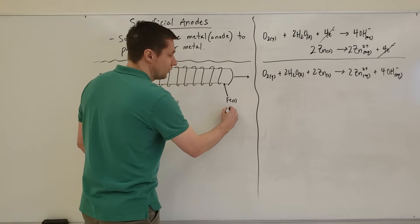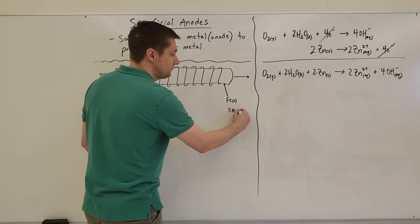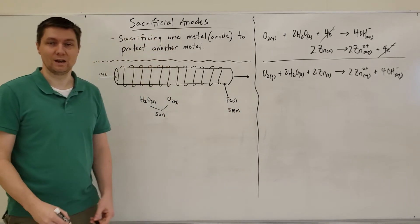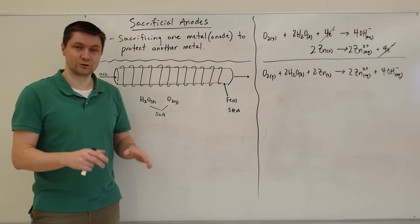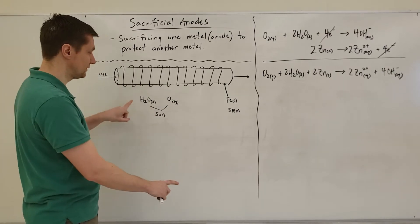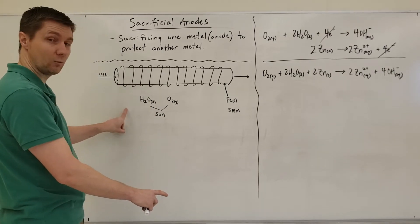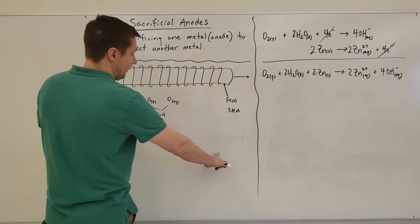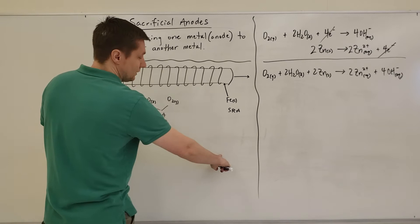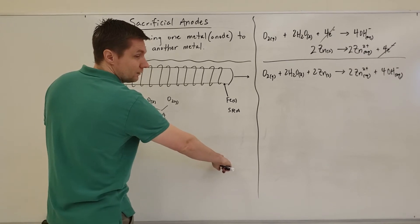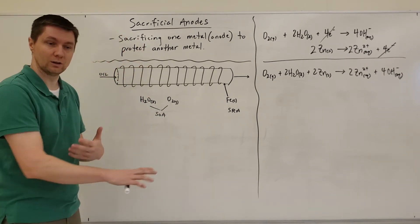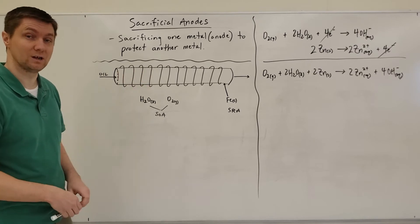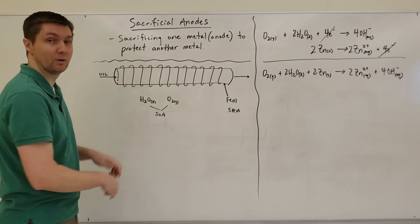Iron, if you look on your data booklet, is a reducing agent. If you use your right-hand, left-hand rule, you'll notice that the oxygen or water and oxygen half reaction as an oxidizing agent is higher than iron, which is a little bit lower in the table. That makes for a spontaneous reaction—my left finger is above my right finger.